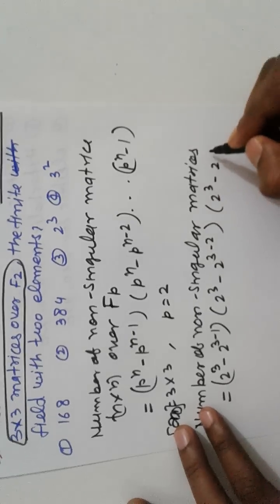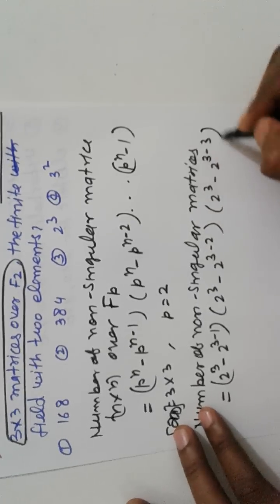times, 2 to 3 minus 2 raised to 2, 3 minus 3 minus 1. And next times 2 to 3 minus 2 raised to 3 minus 1, up to this.